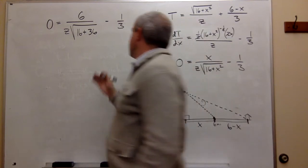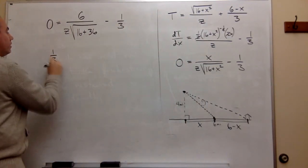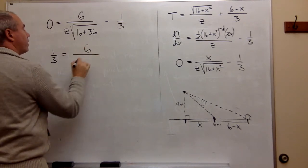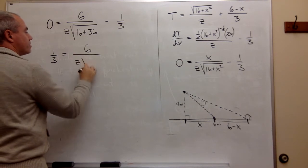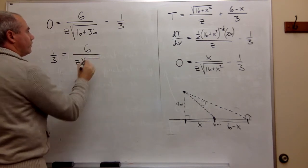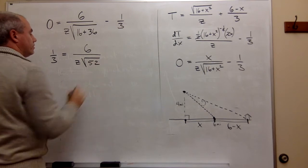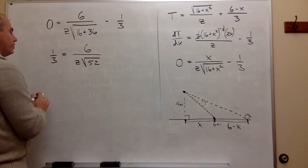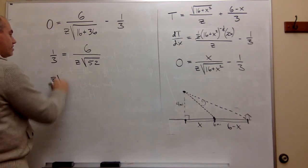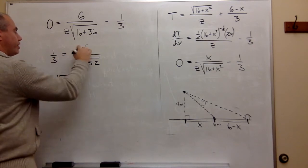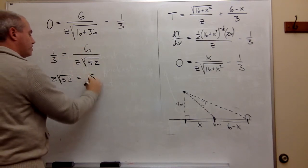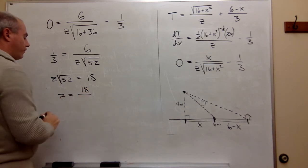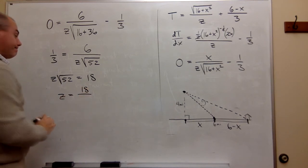And now the only thing left to do is I just need to solve this thing for z. So let's move the one third to the other side, and I get 1/3 is equal to 6 over z times the square root of 52. All right, so we can cross multiply this thing, and we get that z times the square root of 52 is equal to 3 times 6, which is 18.